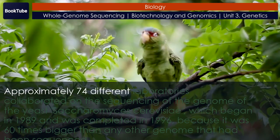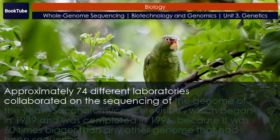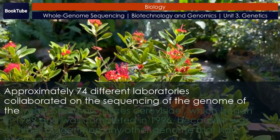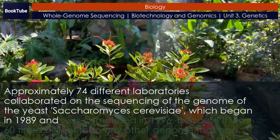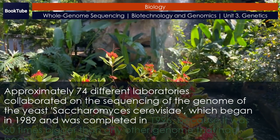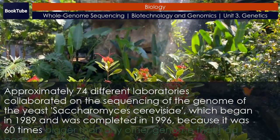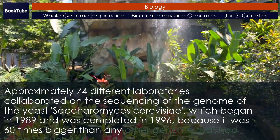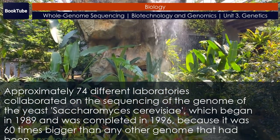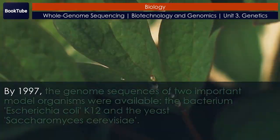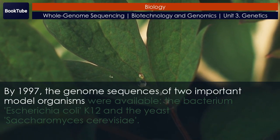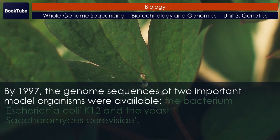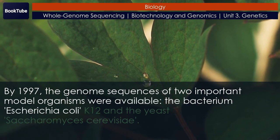Approximately 74 different laboratories collaborated on the sequencing of the genome of the yeast Saccharomyces cerevisiae, which began in 1989 and was completed in 1996, because it was 60 times bigger than any other genome that had been sequenced. By 1997, the genome sequences of two important model organisms were available: the bacterium Escherichia coli K-12 and the yeast Saccharomyces cerevisiae.